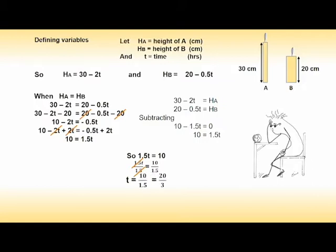Multiply top and bottom by 2 to obtain t equal to 20 over 3. 20 divided by 3 gives 6 hours, with 2 thirds of an hour left over. 2 thirds of an hour is 40 minutes, so the time when both candles are the same height is 6 hours and 40 minutes.